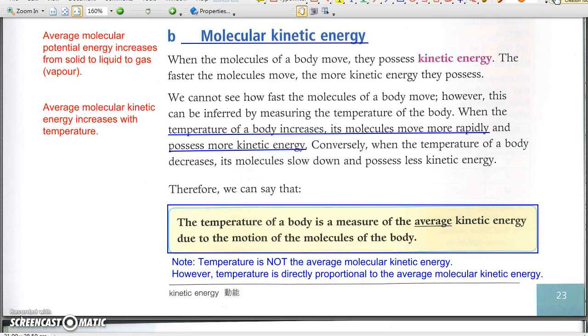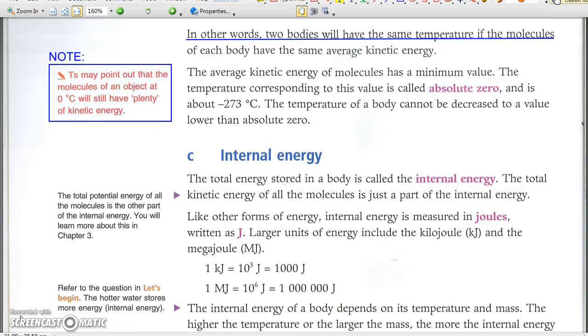B. Molecular Kinetic Energy. The average kinetic energy of molecules is higher at higher temperature. So, two bodies are at the same temperature when their molecules have the same average kinetic energy. When all molecules do not move, their average kinetic energy is also zero.